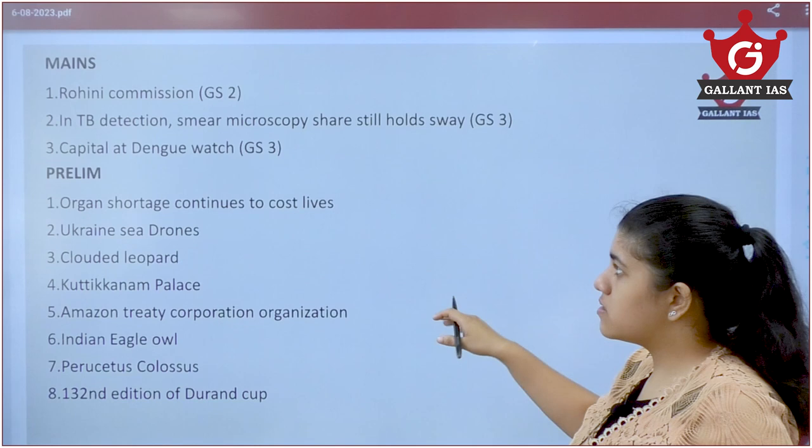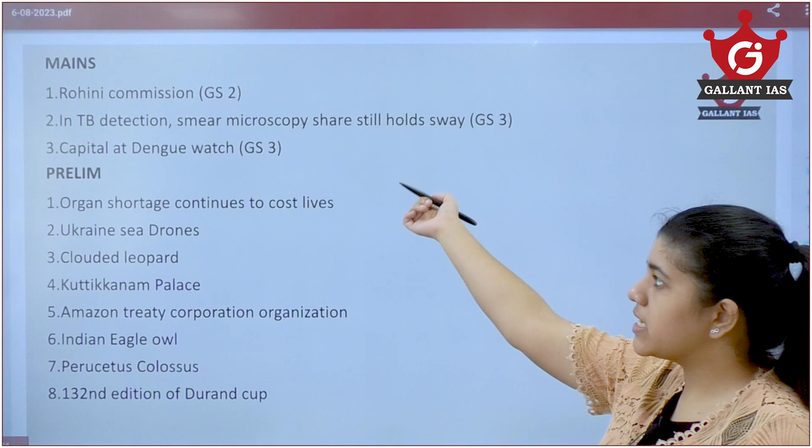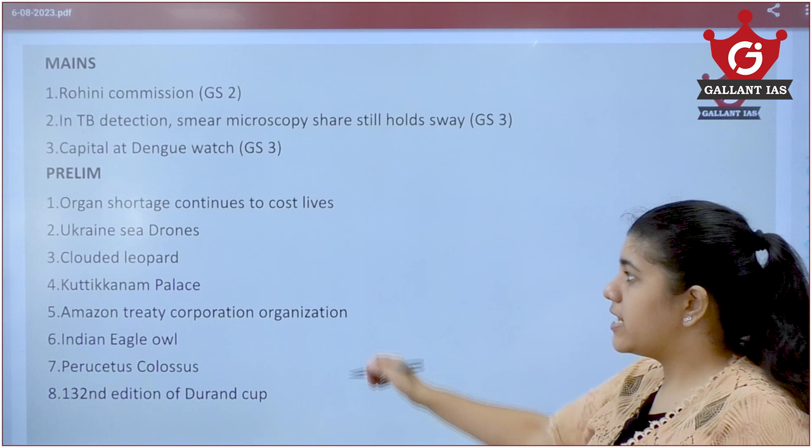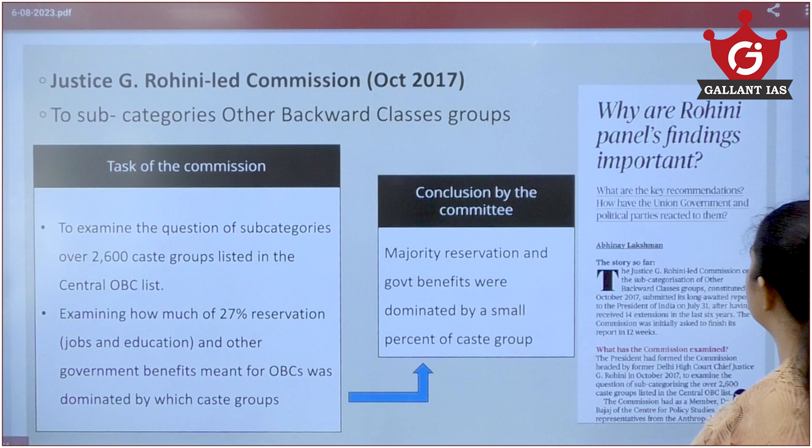Hello everyone, welcome to another session of GAN Current Affairs and News Analysis. We have a lot of topics to deal with today: the Rohini Commission, TB tuberculosis-related news, Dengue, and then in prelims we have about eight topics.